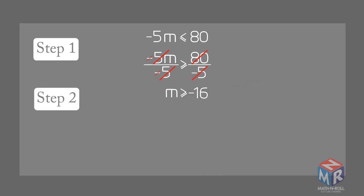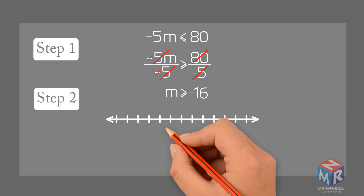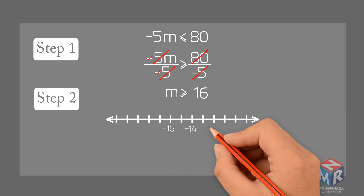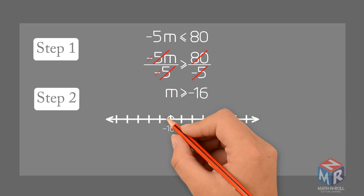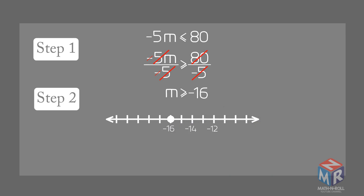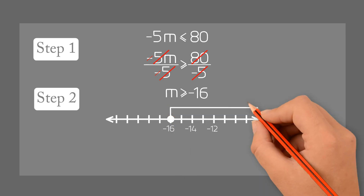Step 2: Graph the solution. Use a closed circle to show that negative 16 is a solution.